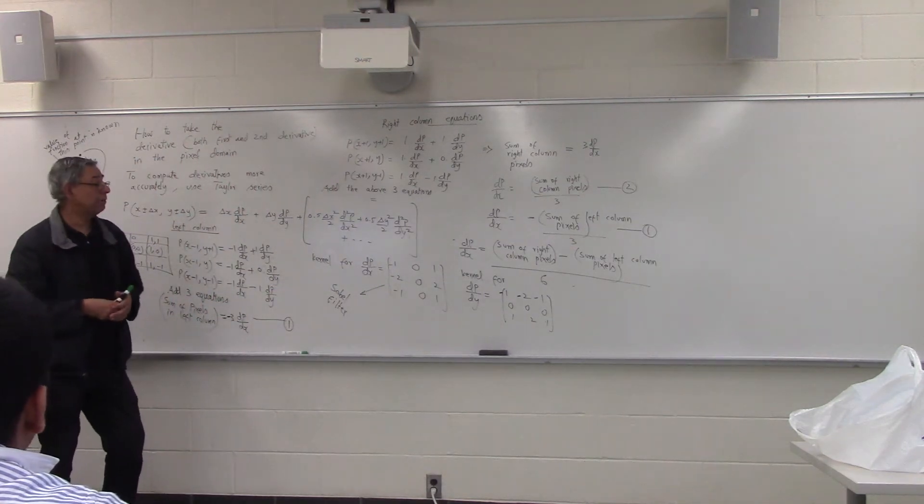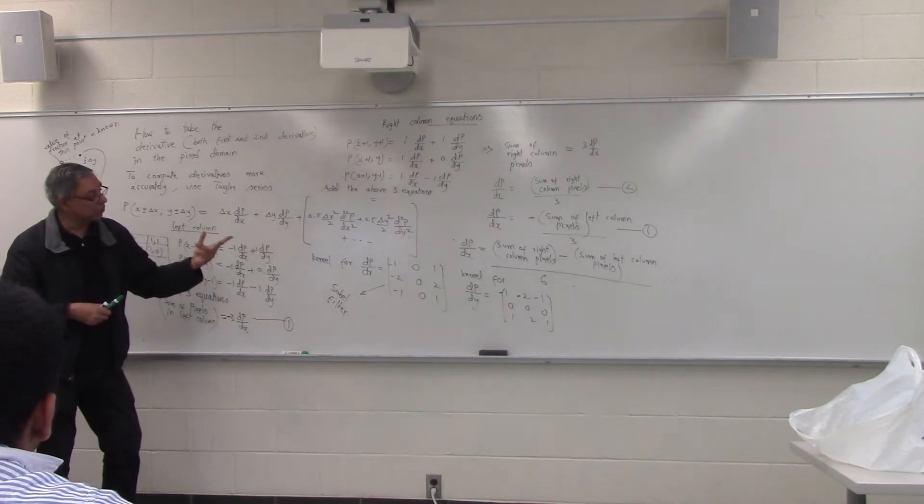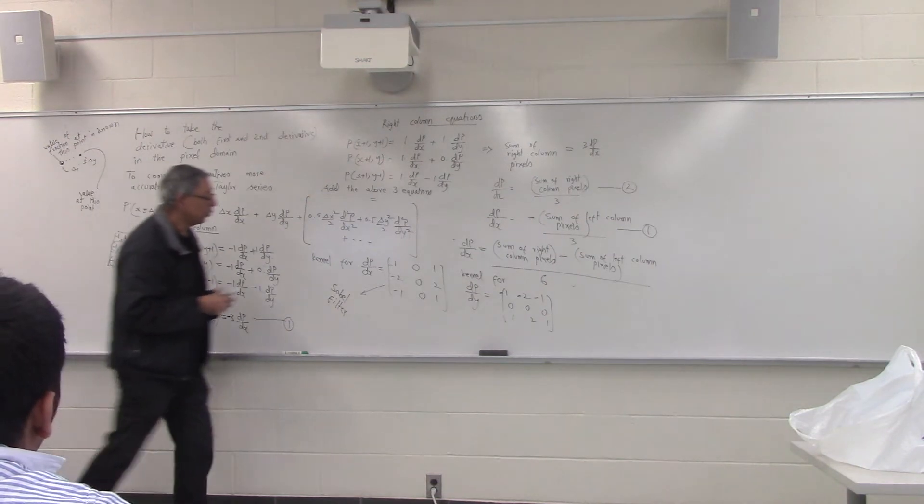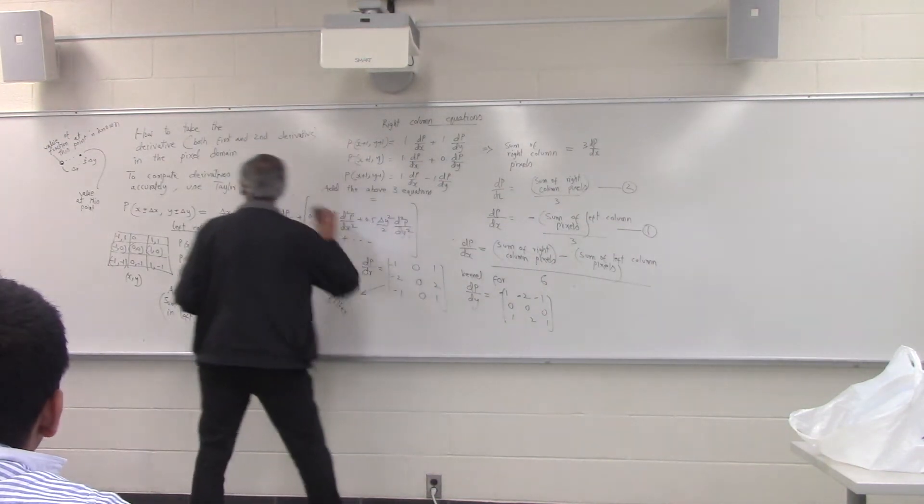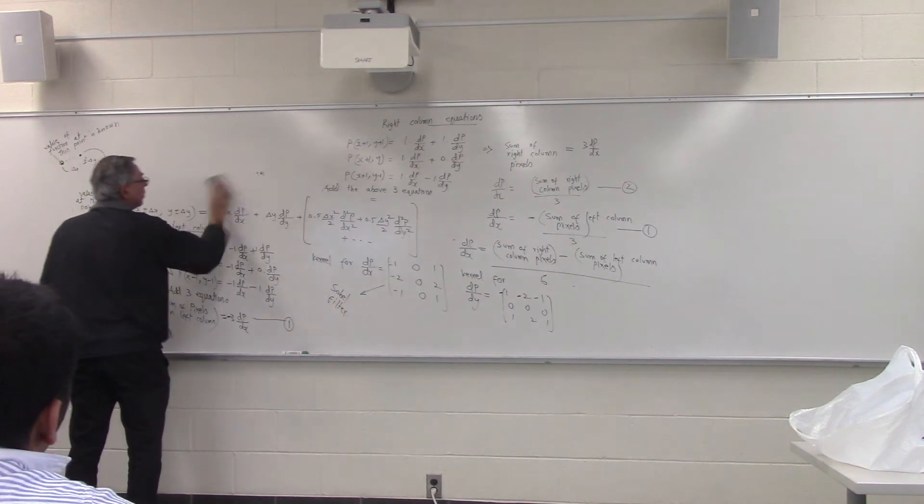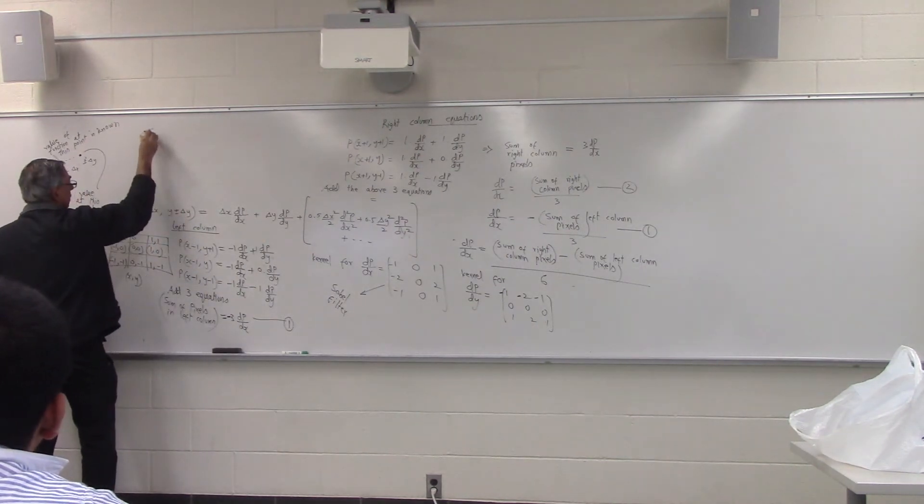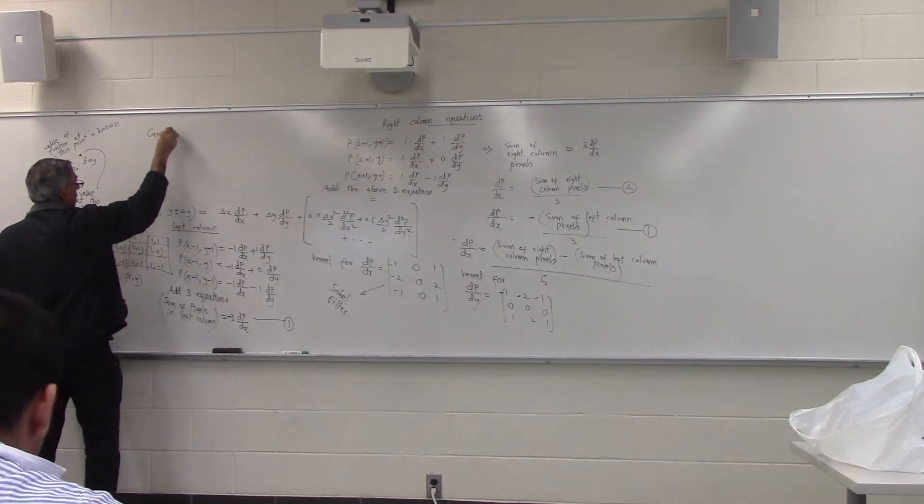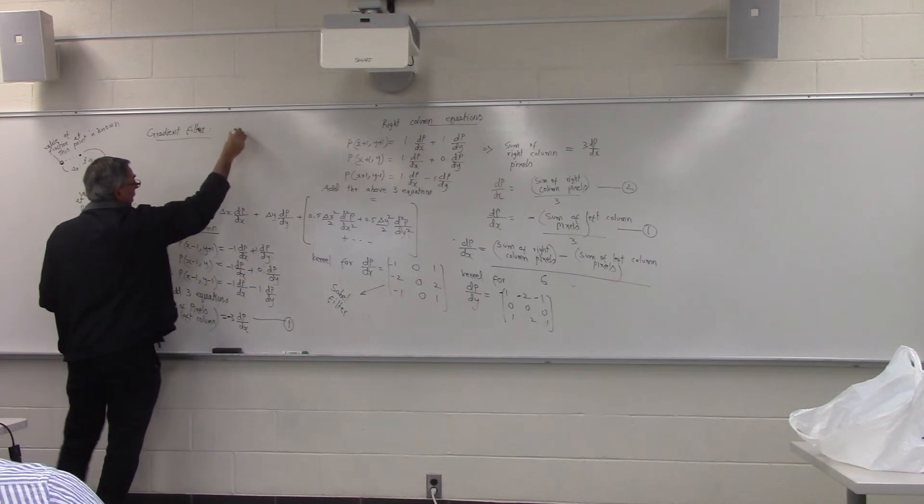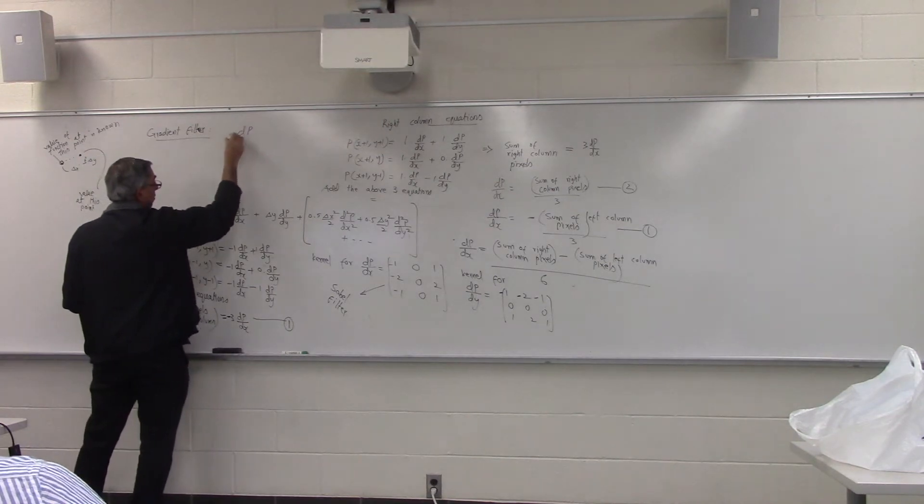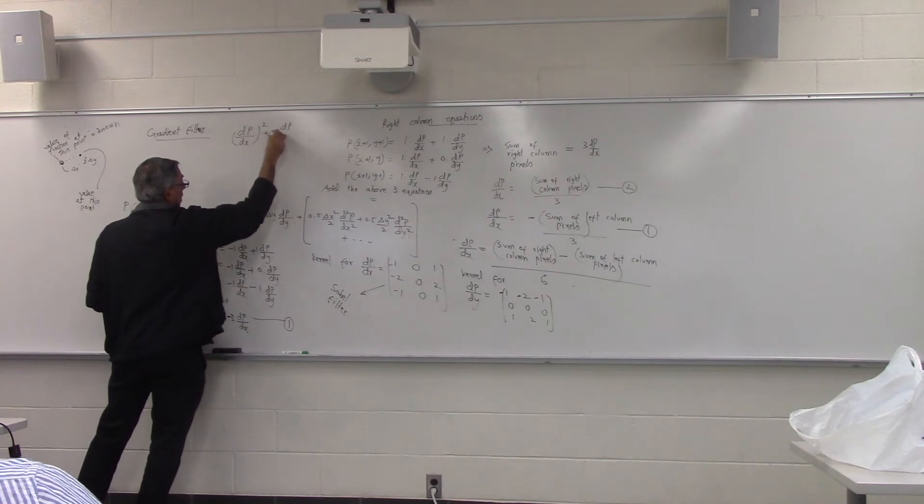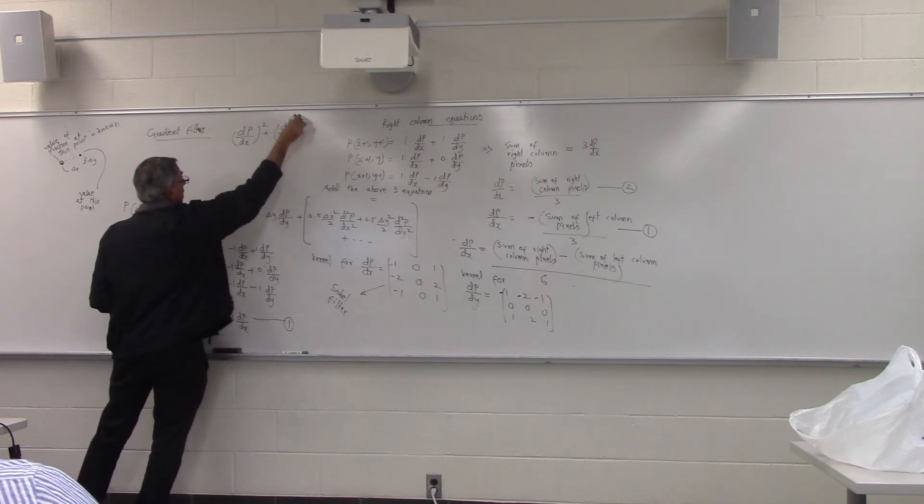OK, so once we have created the two kernels, right, in the x-direction and the y-direction, then what will be the equation for our gradient filter? So as I mentioned, our gradient filter is basically dp over dx squared plus dp over dy squared squared.